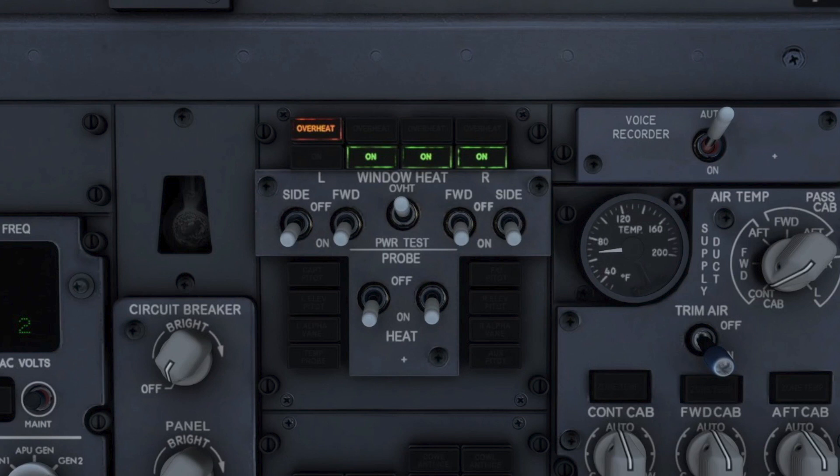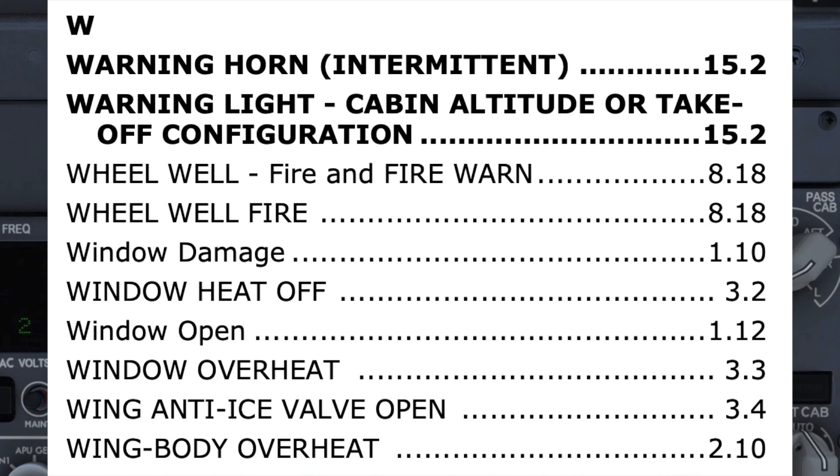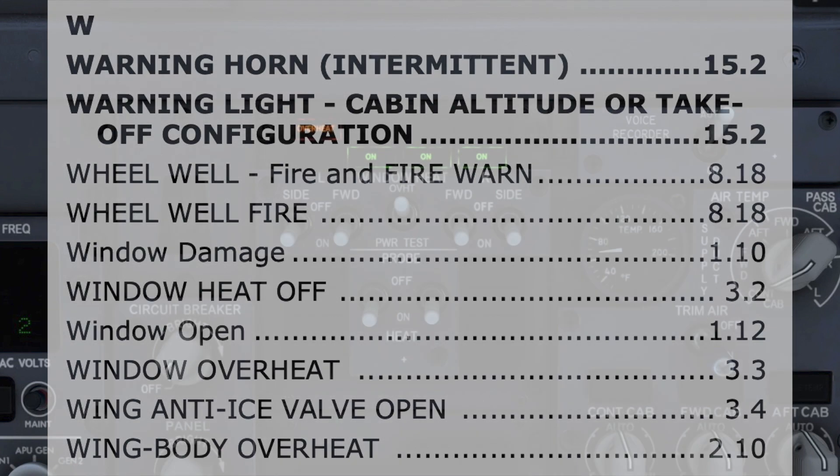Having identified the problem, the pilot flying calls for the window heat checklist. The pilot monitoring checks to see if the checklist is on the quick reference card if applicable, then looks in the Quick Reference Handbook, known as the QRH. The window overheat procedure is listed under W and takes us to page 3.3.